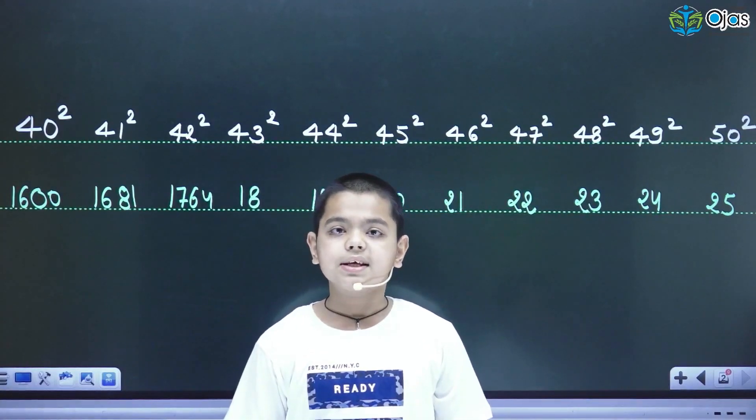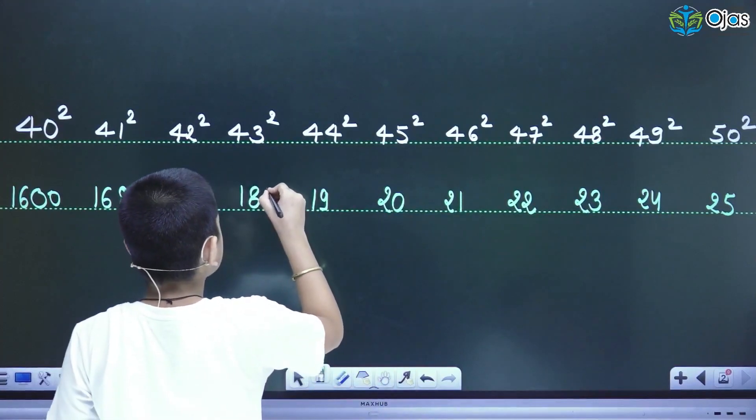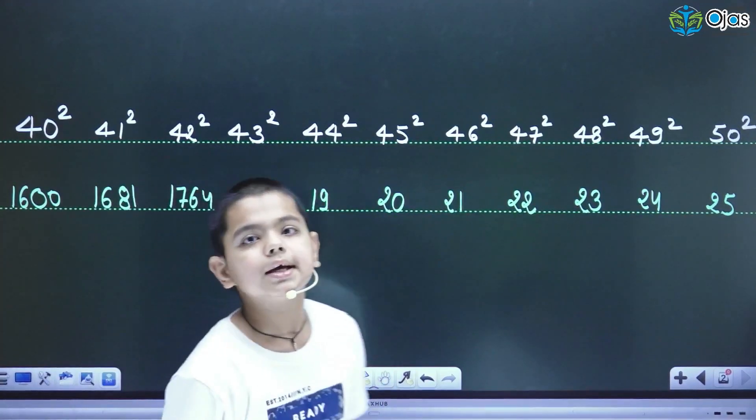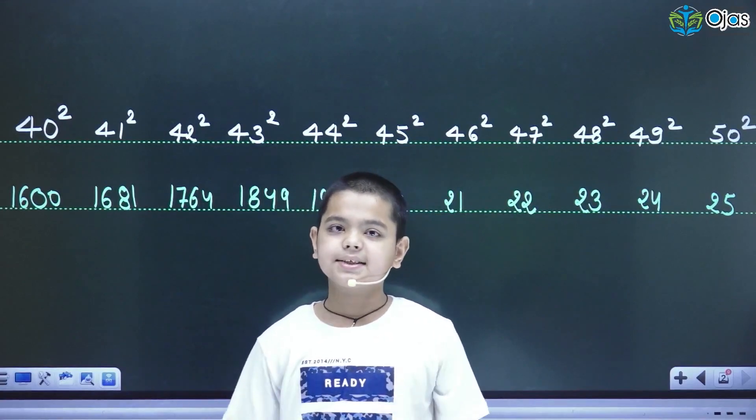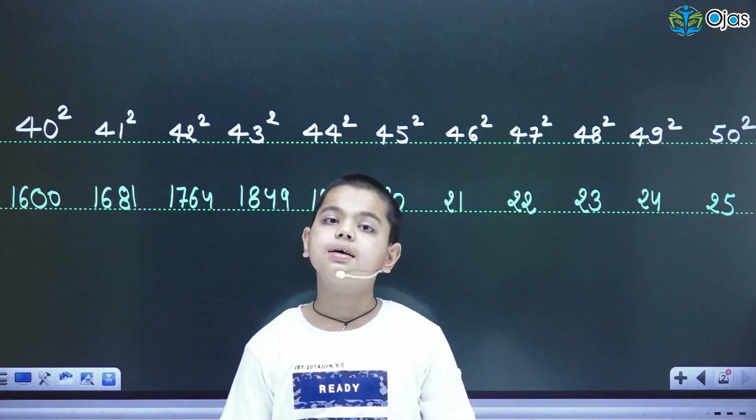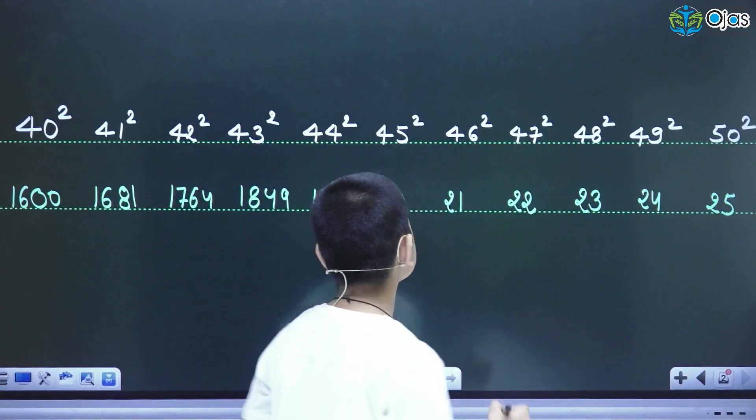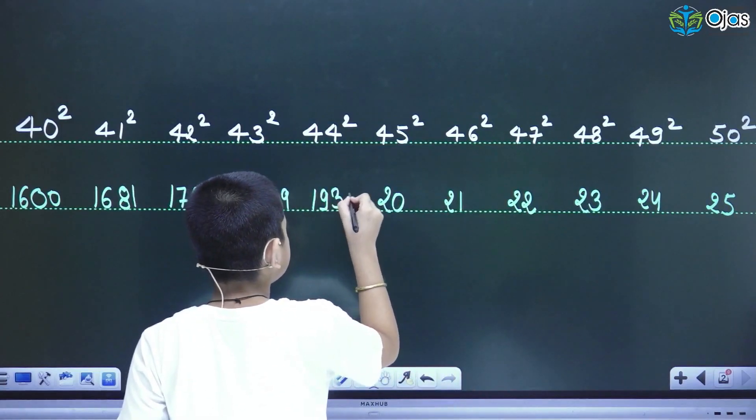For 3, the complement of 3 is 7 and the square of 7 is 49, so I will write here 49. The complement of 4 is 6 and the square of 6 is 36, so I will write here 36.